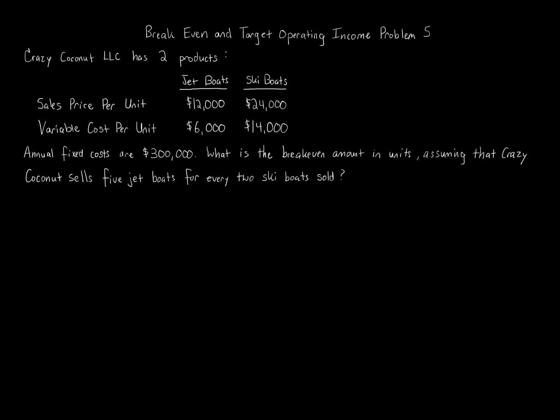Some of you are looking at this like — whoa, how are we going to do this? We've got two different products with different sales prices, different variable costs, and we're trying to determine the break-even amount given a product mix. It does seem challenging, but I'm going to go slow. It uses the same formulas with a few adjustments. Most businesses have more than one product and need to understand the mix to determine break-even or operating profit.